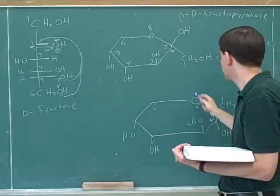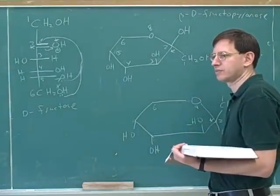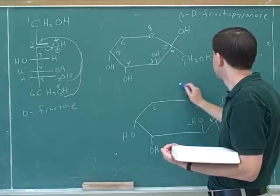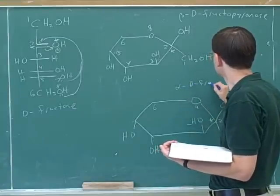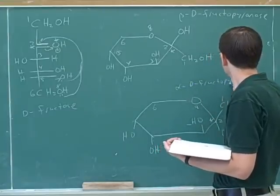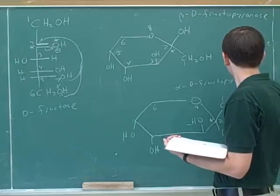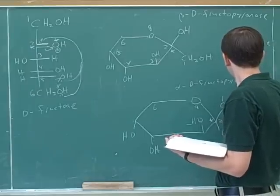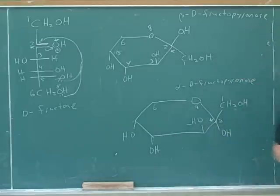Right. And this one is Alpha D. By the way, remember that furanose and pyranose only refer to rings. Furanose is a five-membered ring, pyranose is a six-membered ring.